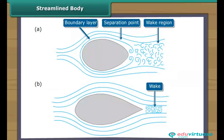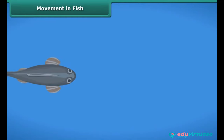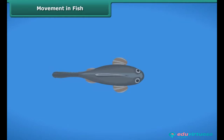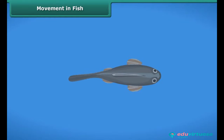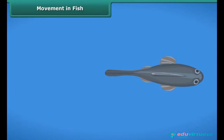The shape of many objects moving through air or water is designed to reduce friction between the object and the air or water — this is called a streamlined body. Fish have a streamlined body, which helps them move fast in water. Fish swim with the help of their fins. The tail moves from side to side and helps the fish swim in the right direction. Some fish move by bending their bodies from one side to another in quick succession, which produces a thrust that helps them move forward.